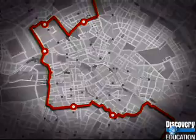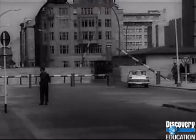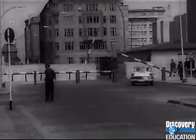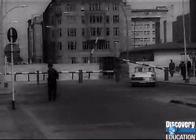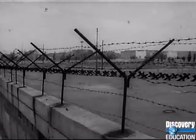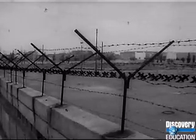While nuclear war was avoided in Cuba, the two sides confronted each other again in Germany. The communist government of East Germany built the Berlin Wall, which separated the citizens of East and West Germany. The Wall stood for nearly 30 years, separating the oppressed from the free, and symbolizing the deep divisions that split the world during the Cold War.